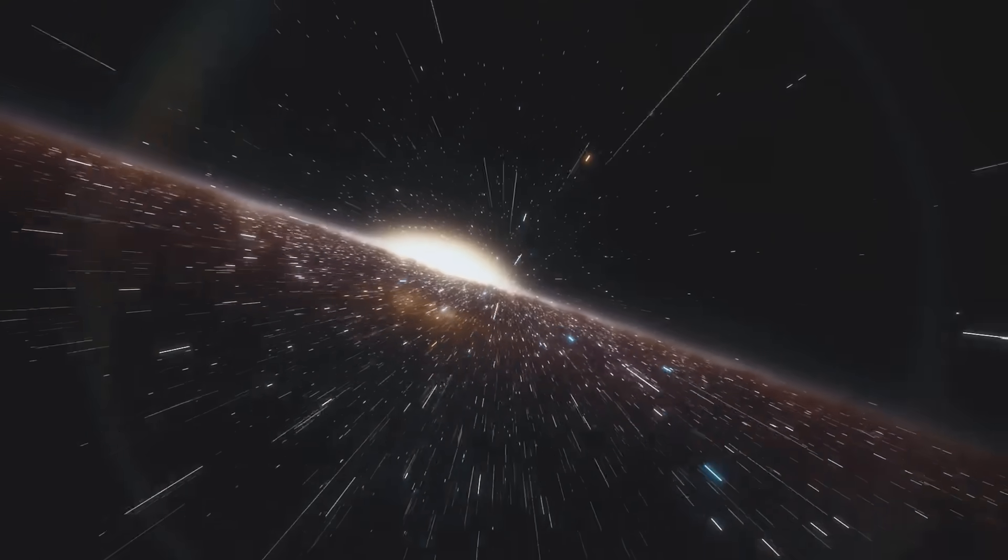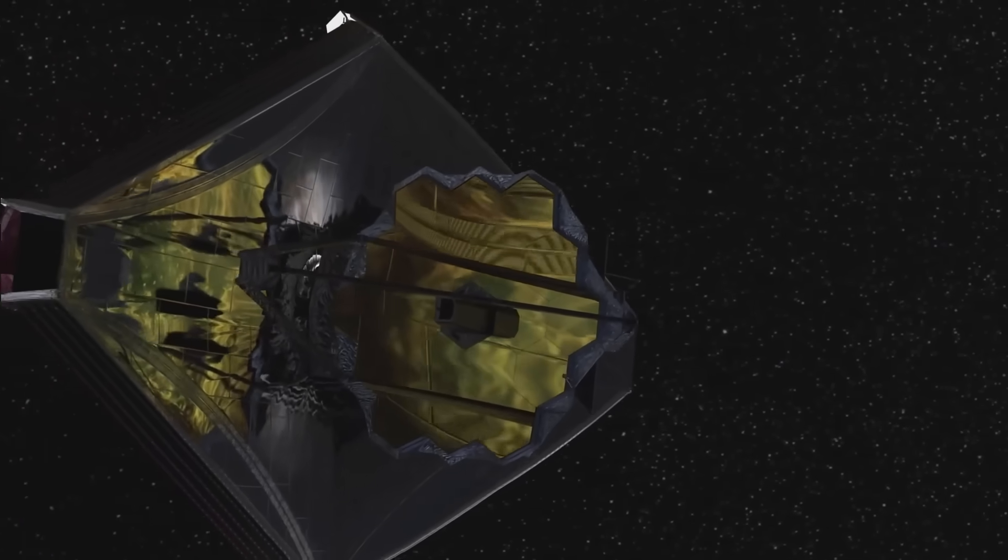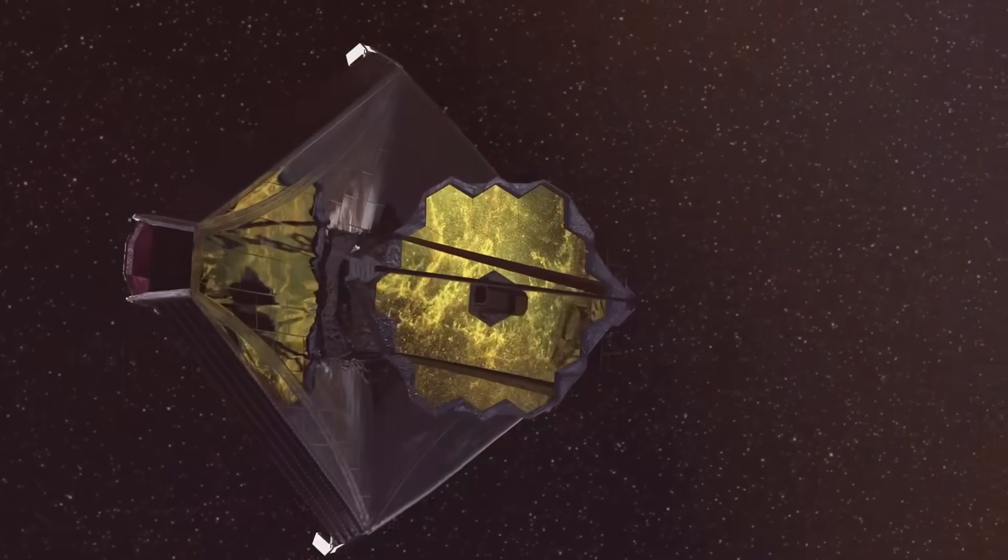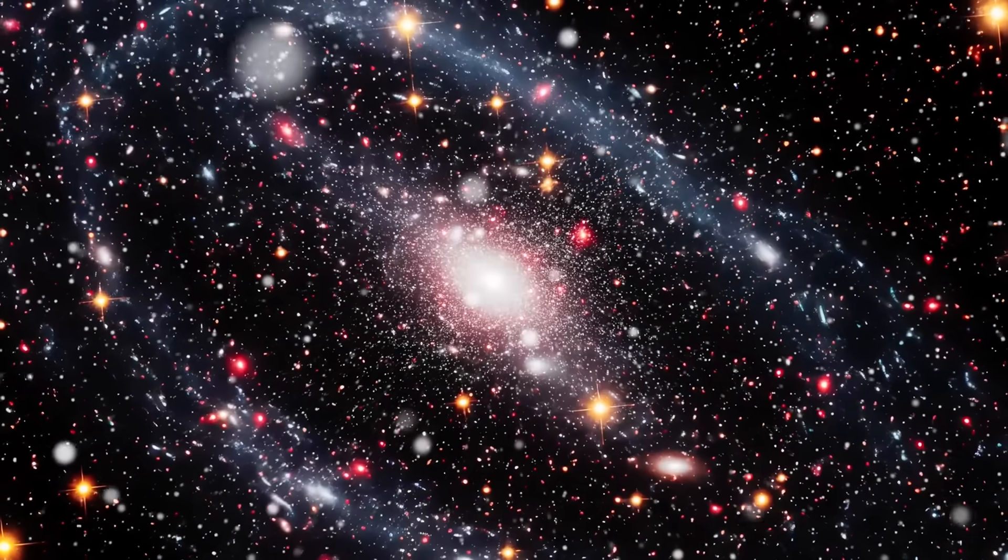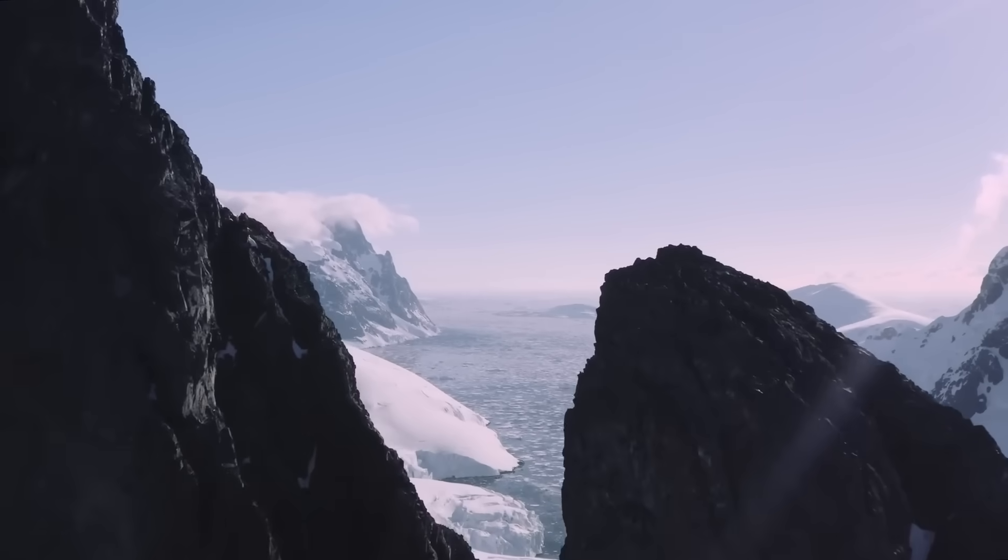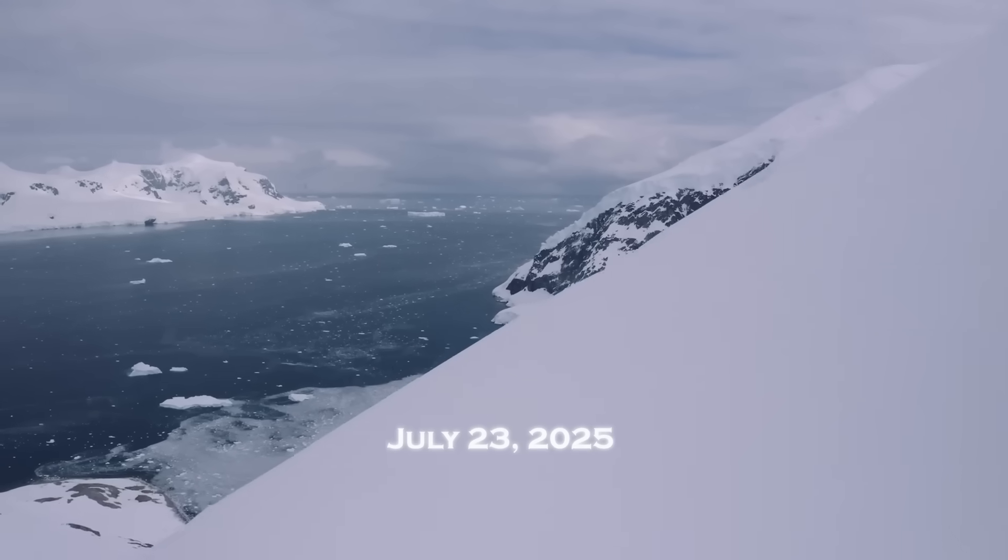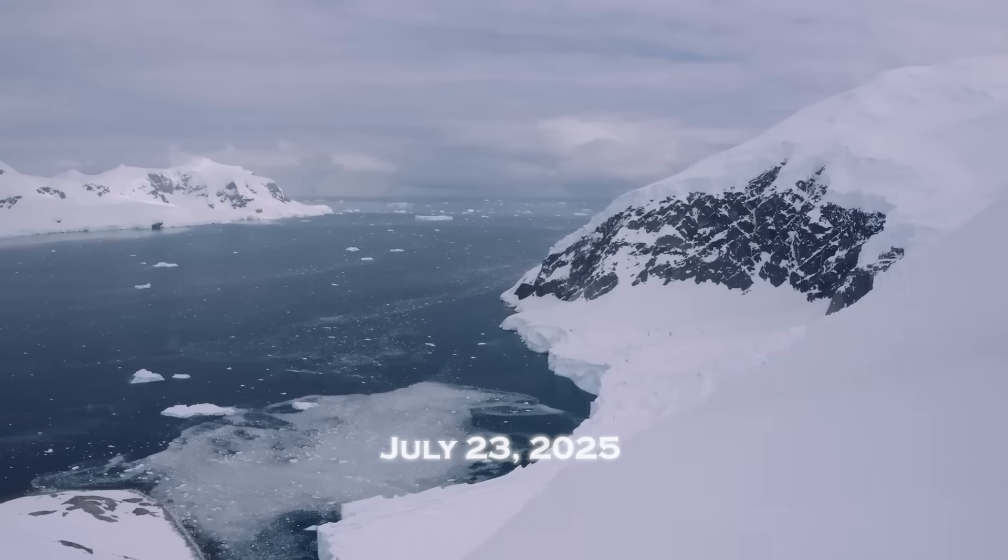Buried deep within the AI's output logs was a set of coordinates. A simple string of numbers, longitude, latitude, and time. At first glance, it looked like just another anomaly. But when an astronomer ran the numbers through a classical simulation, chills ran through the room. The coordinates pointed not to a location in space, but to a date and place on Earth. Specifically, a remote region in the Arctic Circle. And the date? July 23rd, 2025. Just weeks away.